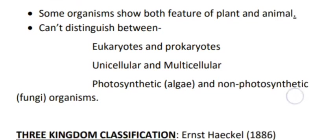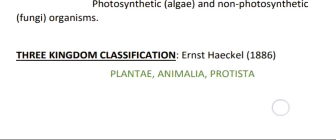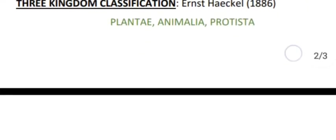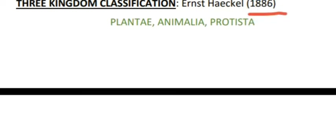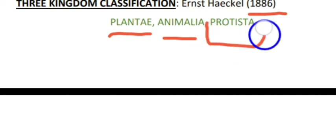Next, the three kingdom classification was given by Ernest Haeckel in 1866. This included the plant kingdom and the animal kingdom, and they added another kingdom — that is, Protista.